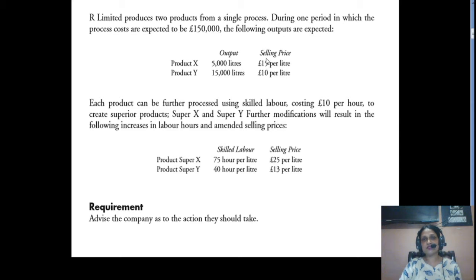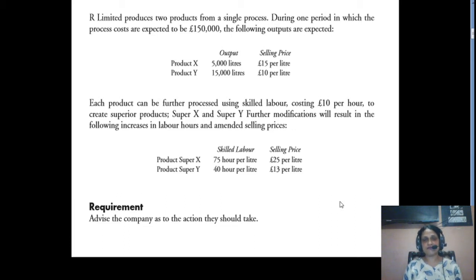For Product X the selling price was £15, so here we get an incremental value of £10. For Super Y, this will need 0.40 labour hours per litre and the price will be £13 per litre, giving an incremental price of £3 since Product Y sells at £10. We have to advise the company: should they process further to Super X or Super Y, or sell as-is as Product X and Product Y?